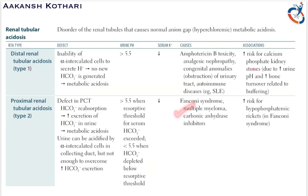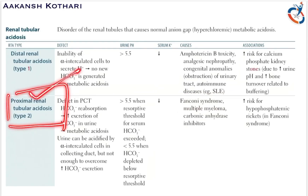Other causes of proximal RTA include multiple myeloma and carbonic anhydrase inhibitors. The urine pH is greater than 5.5 when the resorptive threshold for serum bicarbonate is exceeded, but less than 5.5 when bicarbonate is depleted and below the resorptive threshold — so the urinary pH is variable. Proximal RTA also carries an increased risk of hyperphosphatemic rickets, as seen in Fanconi syndrome.